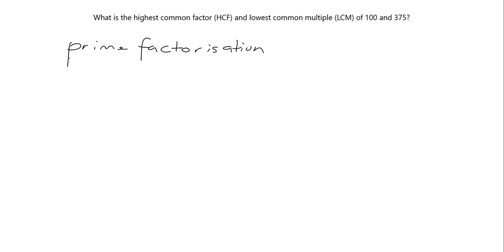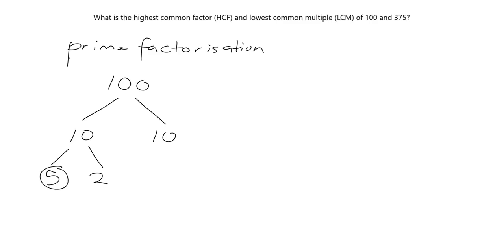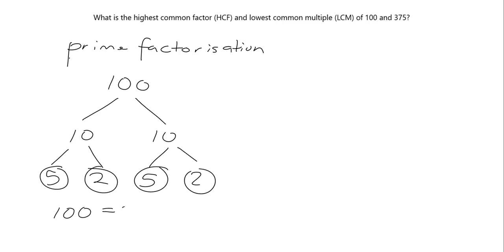First, remember what prime numbers are: they only have exactly two factors — one and itself. Nothing else divides into a prime number. So let's find the prime factorization of 100. We keep breaking it down until we get a product of prime numbers. 100 is 10 times 10. Those aren't prime numbers, so we break further: 10 is 5 times 2. Both 5 and 2 are prime numbers. This 10 also breaks into 5 and 2. So 100 equals 2 squared times 5 squared.